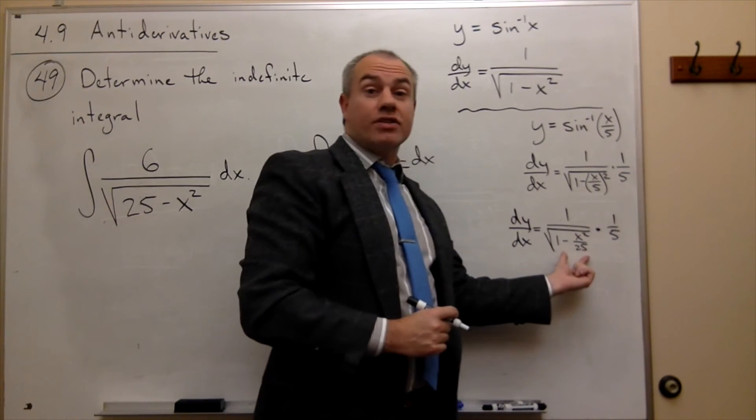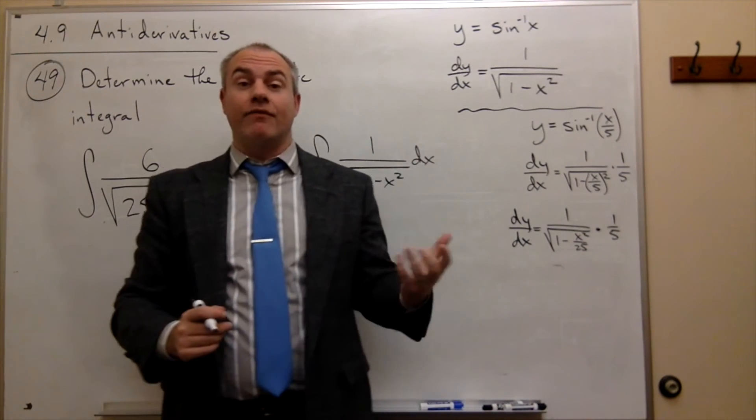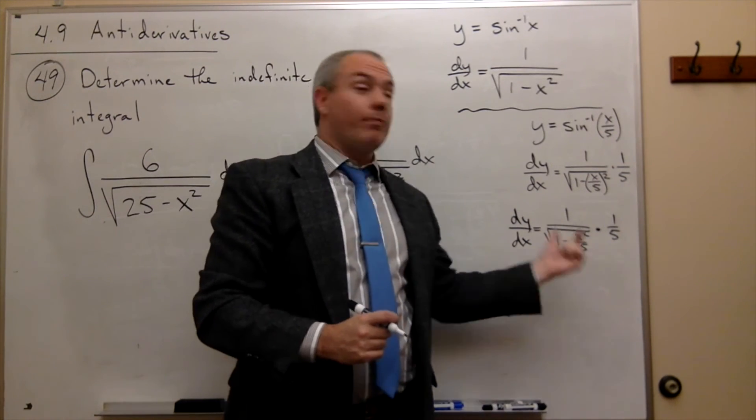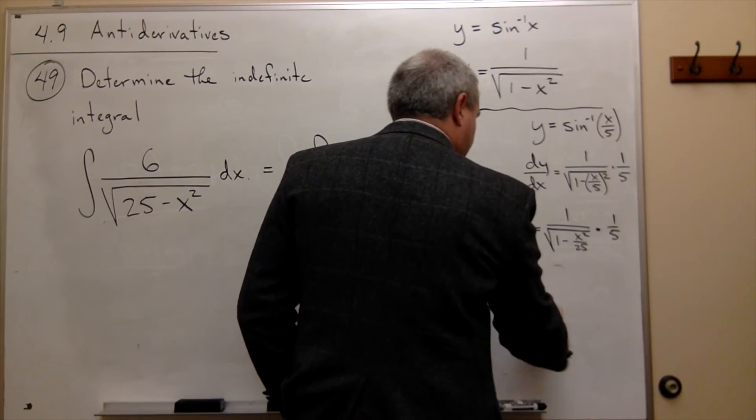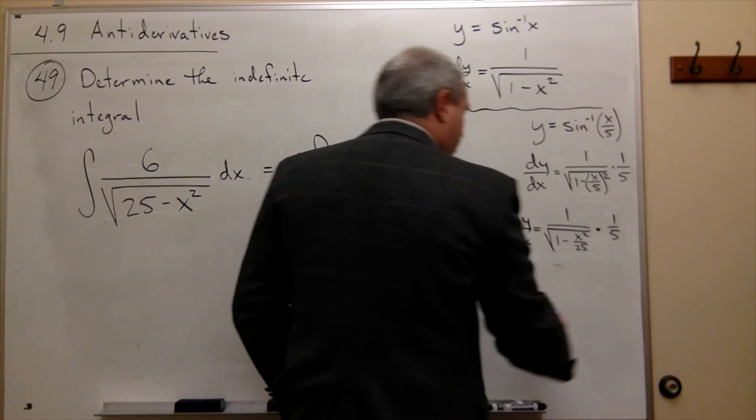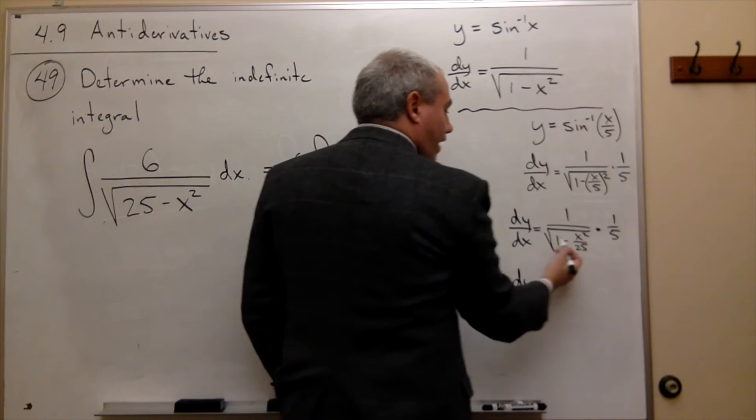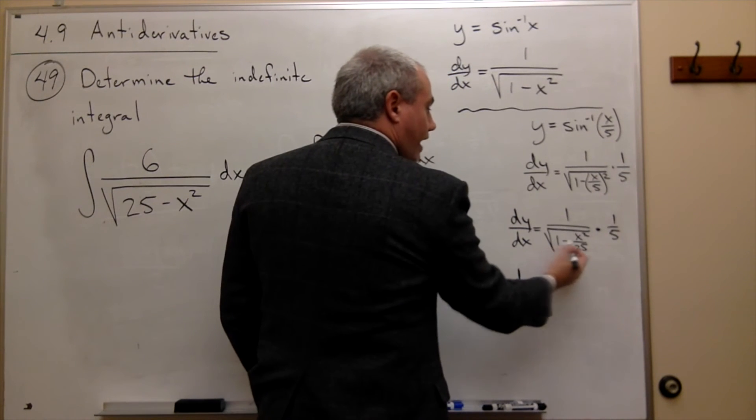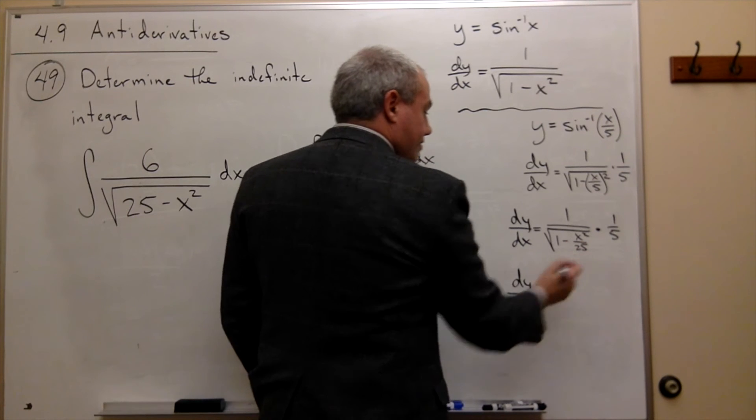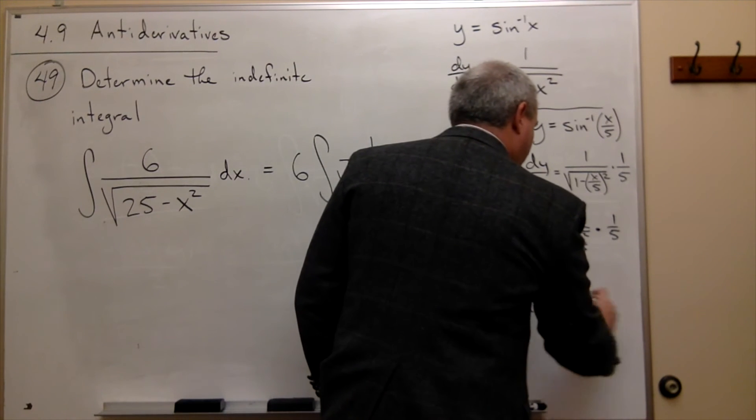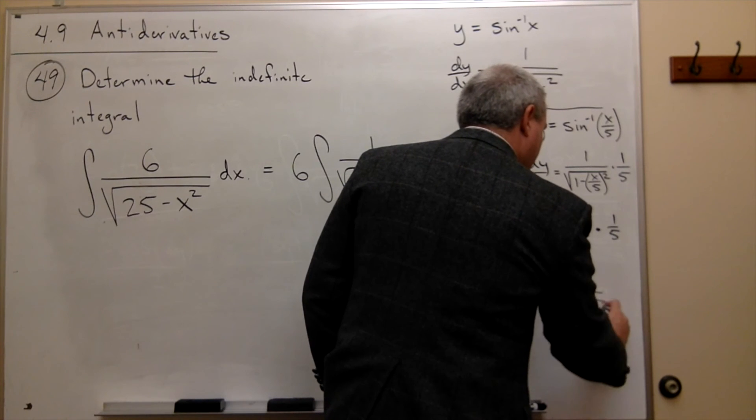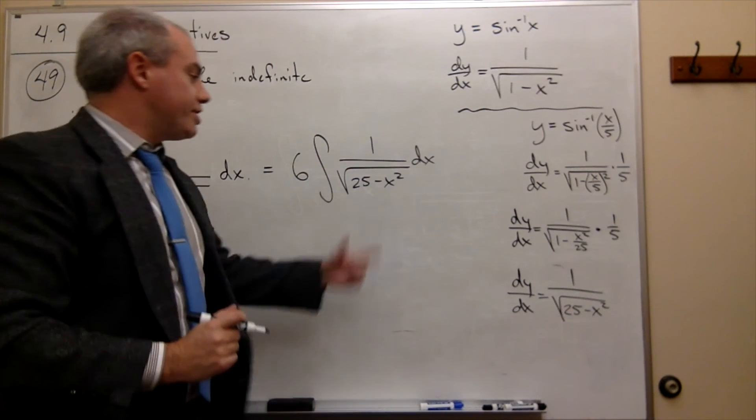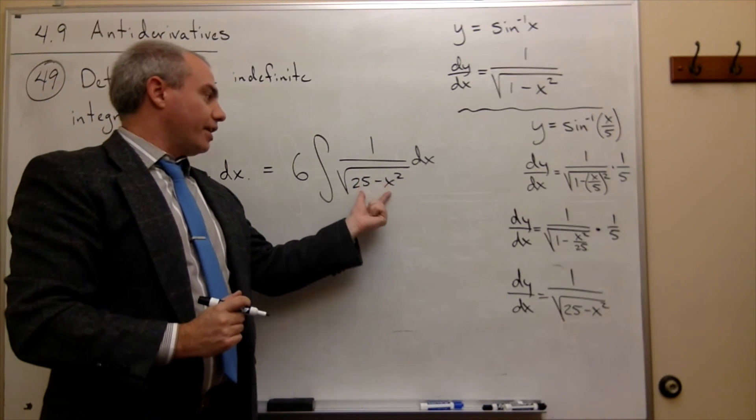Now, what if I took that 5 and I put it inside of the square root? 5 inside of the square root is the same as multiplying everything inside by 25. So if I move that 5 inside, the 25 cancels this 25. So I get 1 over the square root of 25 minus x squared, which is exactly what I have right here.